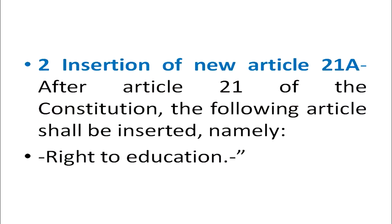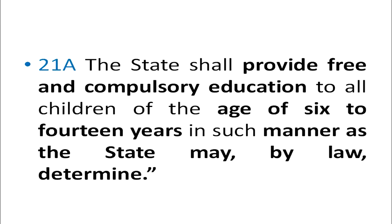In this act it was also mentioned there was an insertion of new Article 21A. After Article 21 of the Constitution, the following article shall be inserted, namely, Right to Education. Article 21A reads: the state shall provide free and compulsory education — please underline these words — free and compulsory education to all children of the age of 6 to 14 years, that is the elementary age group, in such manner as the state may, by law, determine.